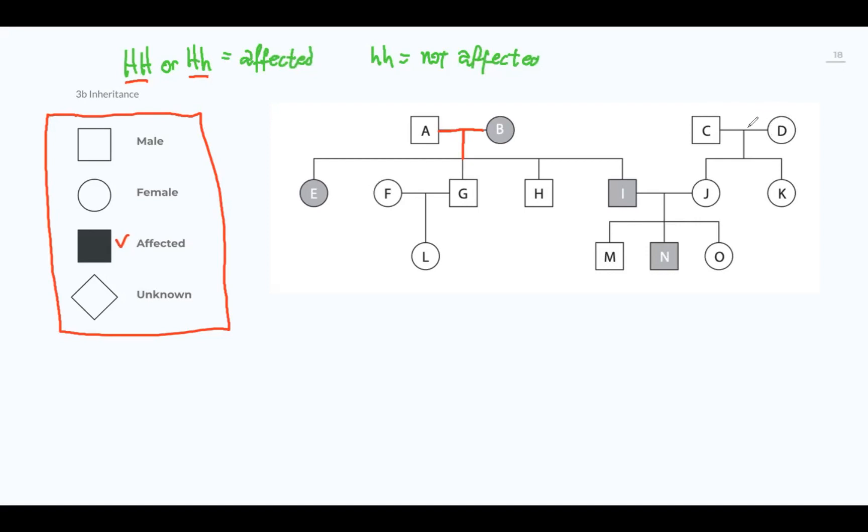C and D, they had two daughters, J and K, and J met I, the affected male here. They had three children, M, N, and O, and N is an affected male. So what do we know about this? Just by looking, we can see these families, and we can see if they are male or female. We can see the relationship between them, and we can see if they're affected or not.